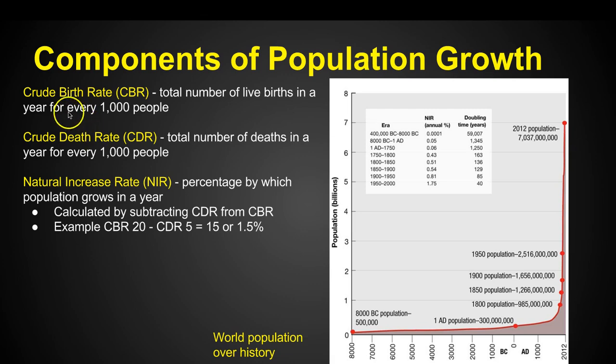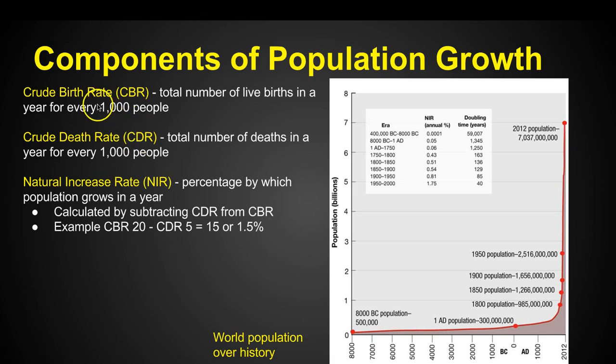But if we're having a high CBR and a low CDR — like we're not having people die — then our population is going to grow because we're having a bunch of kids and people are not dying.